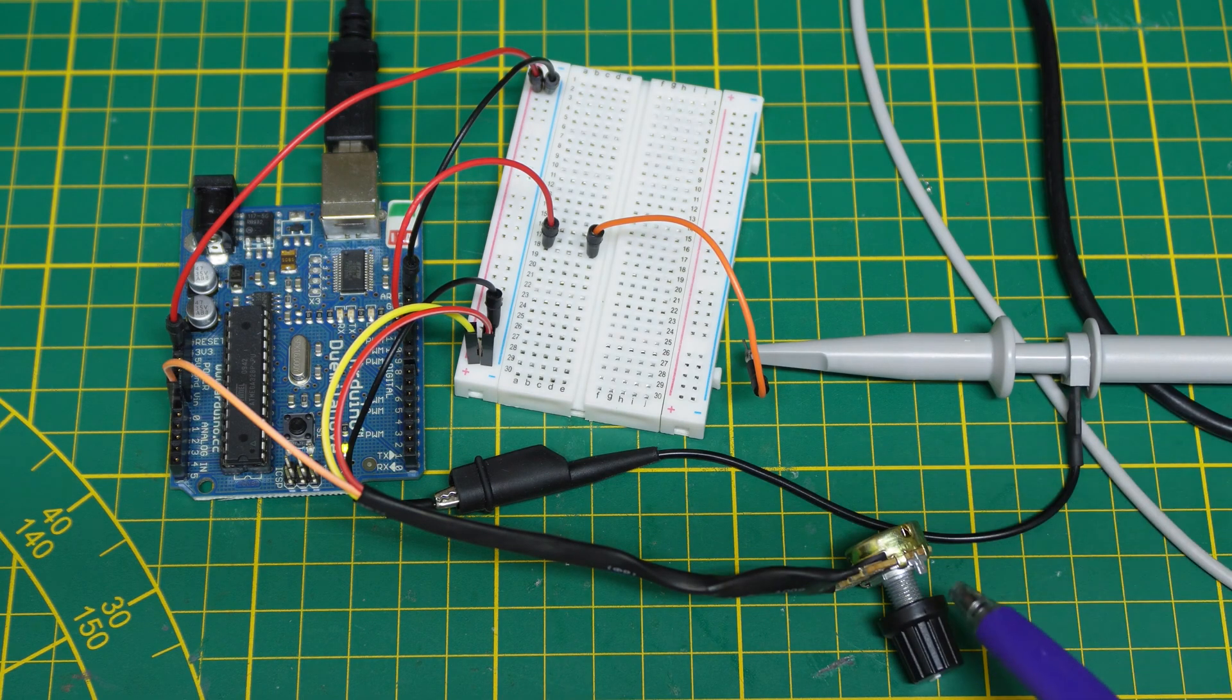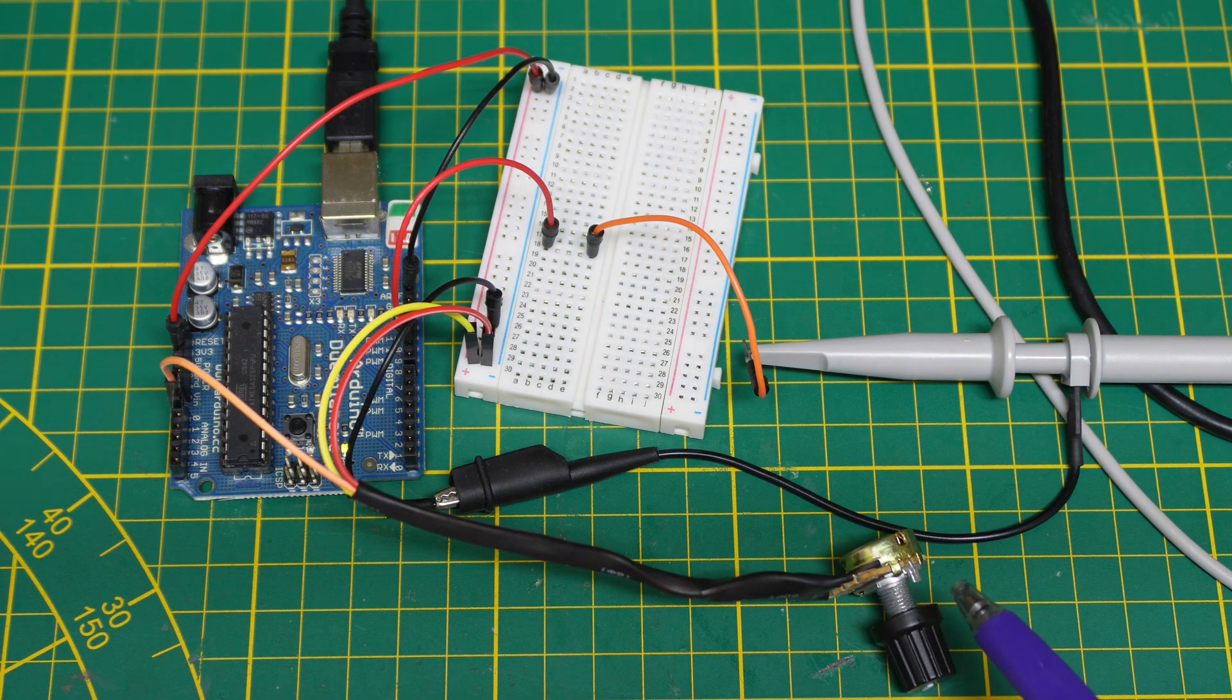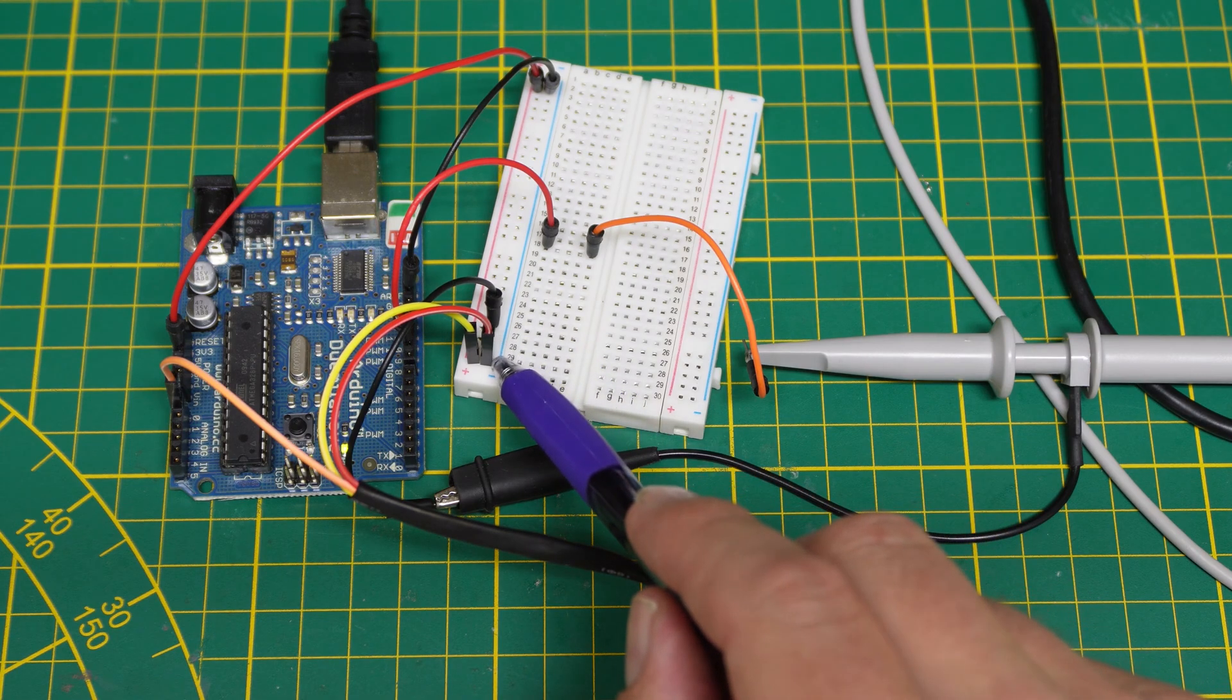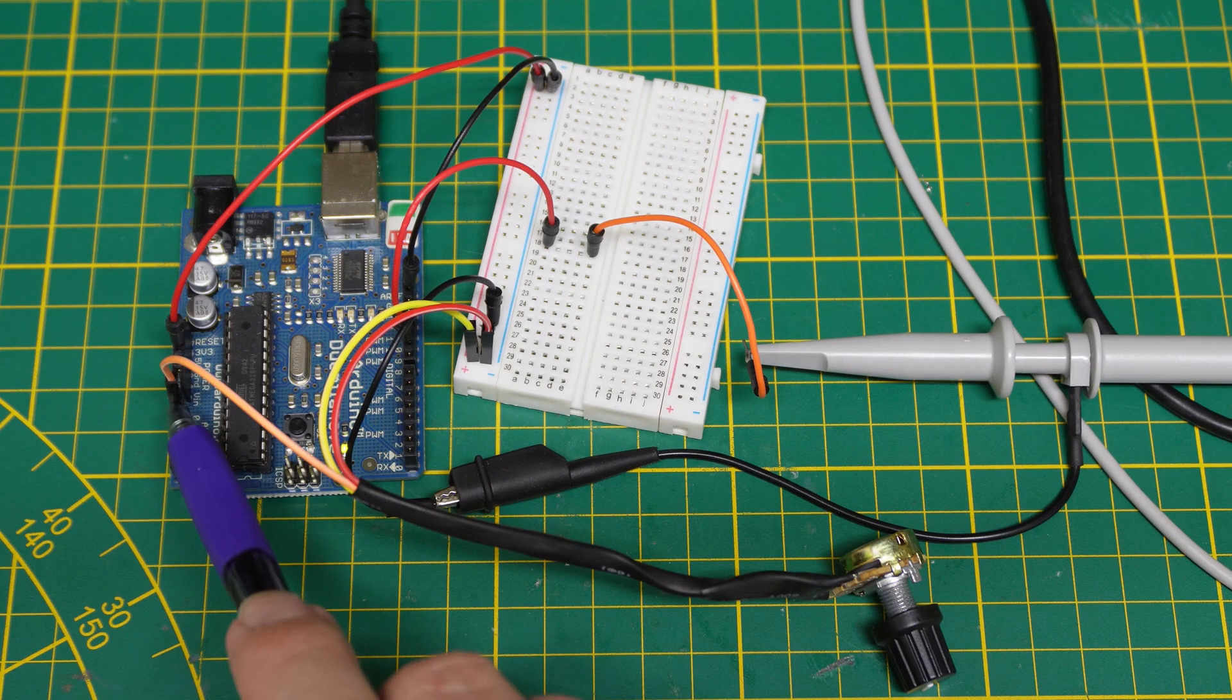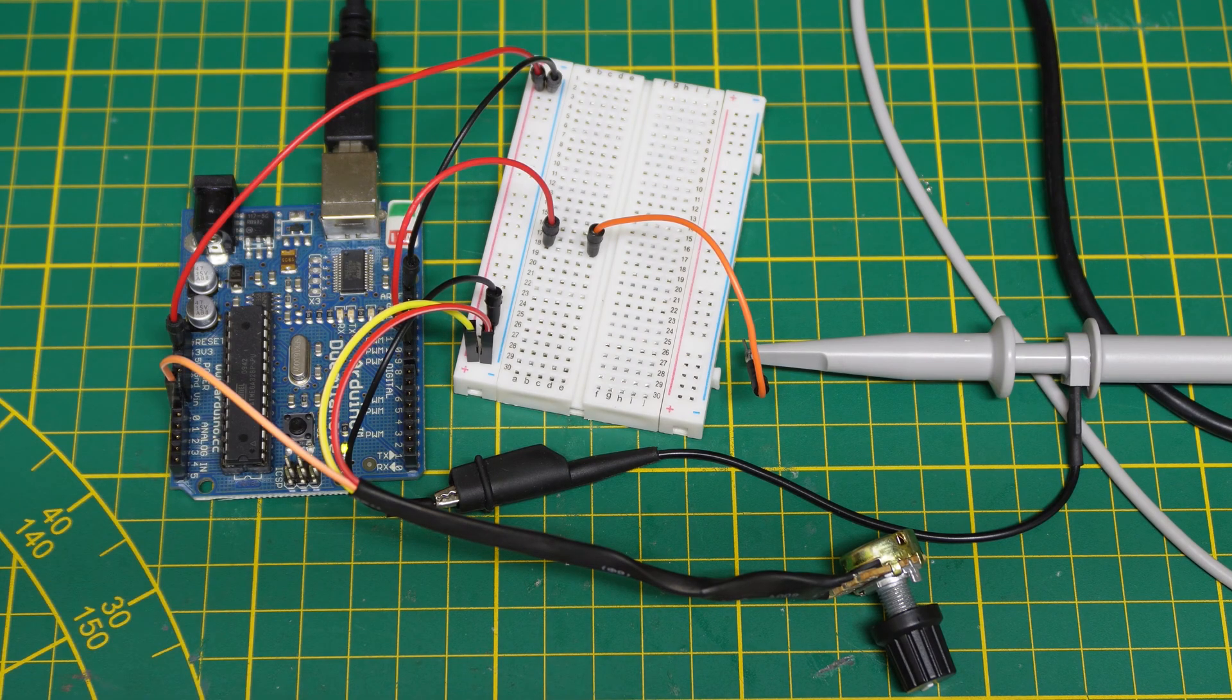Finally, a potentiometer for controlling the duty cycle of the signal. It gets 5-fold and ground from the breadboard and the wiper is connected directly to A0 on the Arduino.